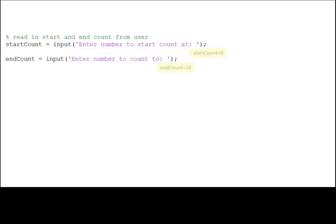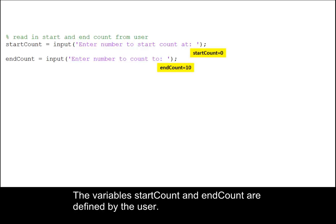This tutorial uses a while loop to display the numbers from a user-specified start number to a user-specified stop number. The variables startCount and endCount are defined by the user.